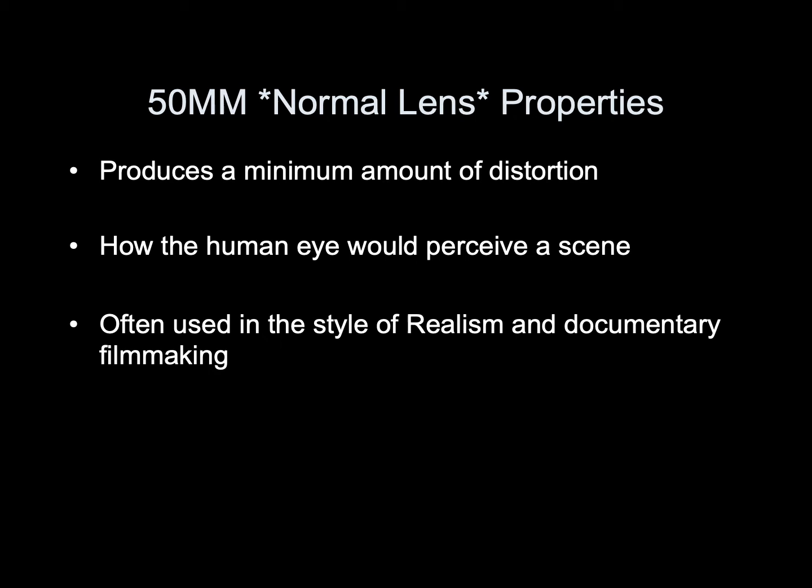Normal lens properties — 50mm. This would be the default lens on your smartphone or any type of camera that doesn't have an interchangeable lens. It produces a minimum amount of distortion and represents how the human eye would perceive a scene, so it's often used in the style of realism and documentary filmmaking.